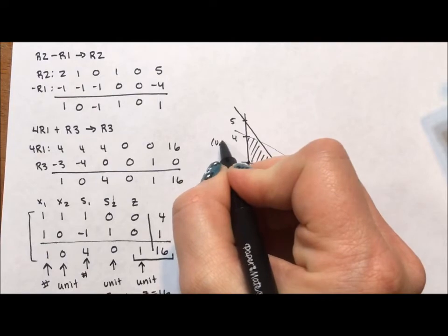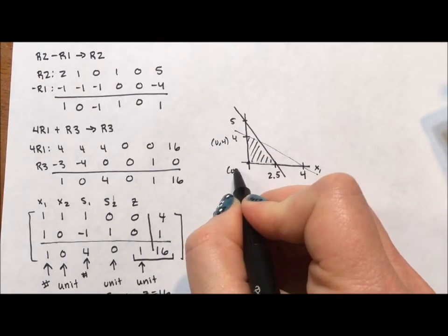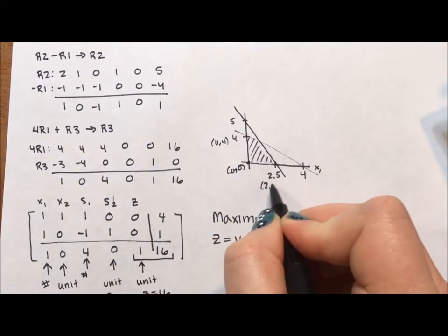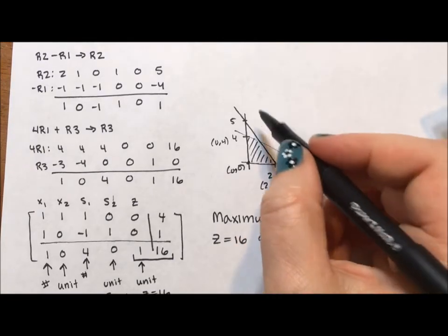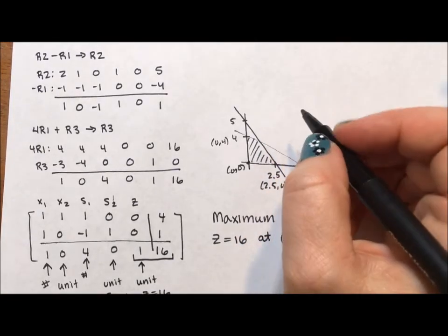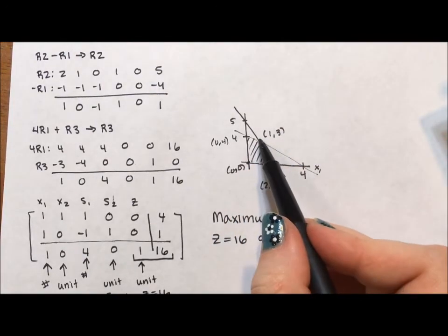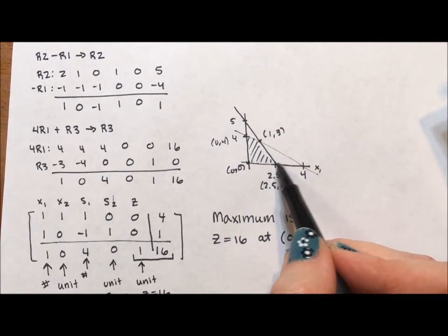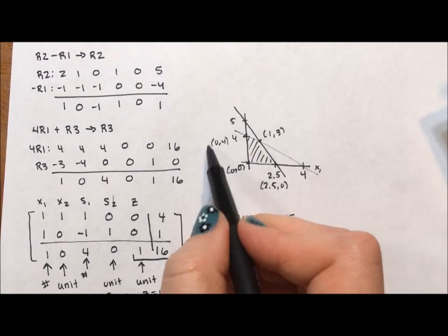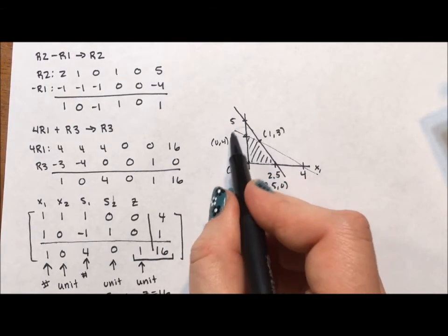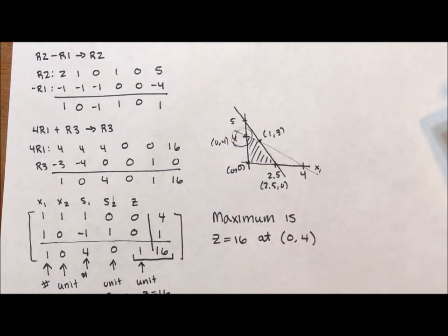So if we were to test all of these points, 0, 4, 0, 0, 2.5, 0, and the point of intersection, which is 1, 3. If we were to test each of these points, the smallest 16 would be gotten at this corner of the feasible region.